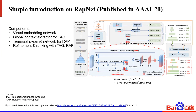Our proposal generation method is based on the previous work RepNet, with some modifications to make it more suitable for this challenge. RepNet contains four components: a visual embedding network and global context extractor for generating TAG proposals, a temporal pyramid network for generating relation-aware proposals, and a refinement and re-ranking module for combining these two kinds of proposals. It achieves high precise boundaries and performs well in temporal action-proposal generation tasks, also winning second prize in the 2019 ActivityNet challenge.